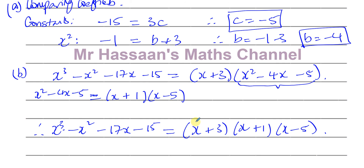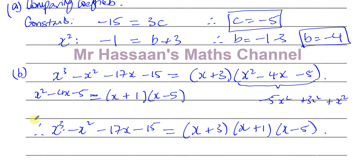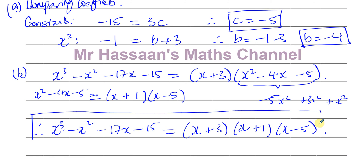Checking the x squared terms: x squared times minus 5 gives minus 5x squared; 3 times x times x gives plus 3x squared; x times x times 1 gives plus x squared. That's minus 5 plus 3 plus 1 equals minus 1x squared, which matches. You can expand the whole thing to verify, but that's the answer.